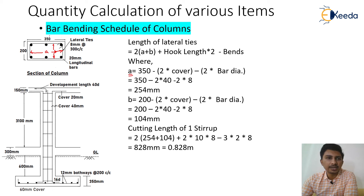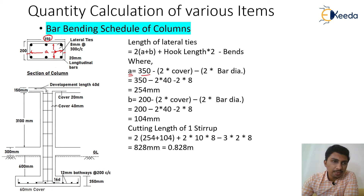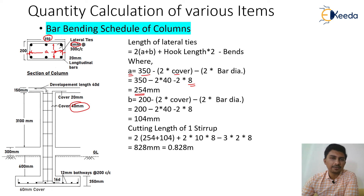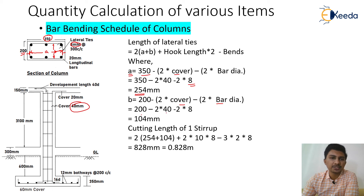To calculate 'a' (horizontal end-to-end): a = total column dimension − 2 × cover − 2 × bar diameter = 350 − 2×40 − 2×8 = 254 mm. For 'b' (vertical end-to-end): b = 200 − 2×40 − 2×8 = 104 mm. These give us the 2(a+b) component of the formula.